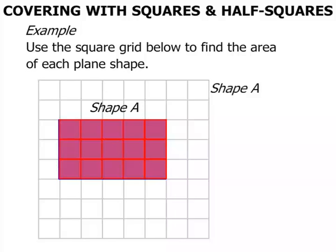So we say that shape A has an area equal to 15 squares. It took 15 squares to cover the shape.